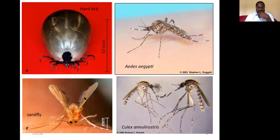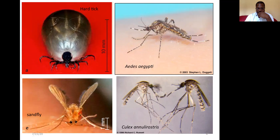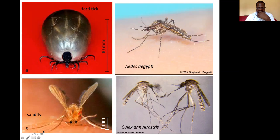Here you can see an example of a hard tick. Aedes and Culex are the two major mosquitoes involved in the transmission of viral zoonotic infections, and here we have a sandfly — this is how a sandfly looks like. Those are the major vectors involved in the transmission of viral zoonosis or zoonotic infections.